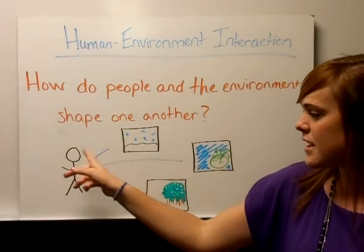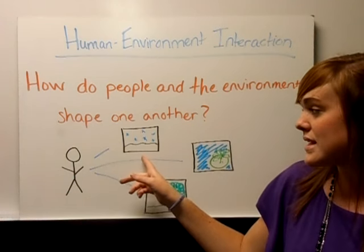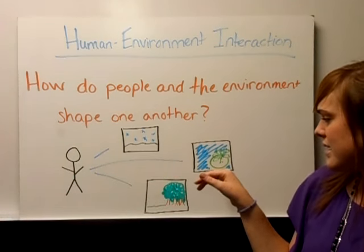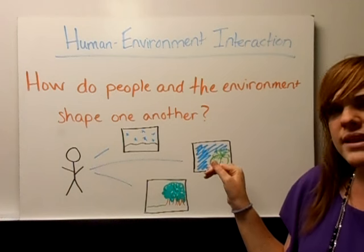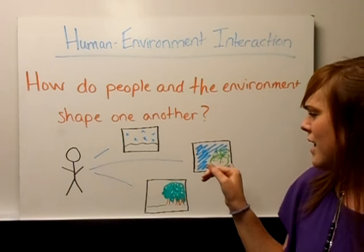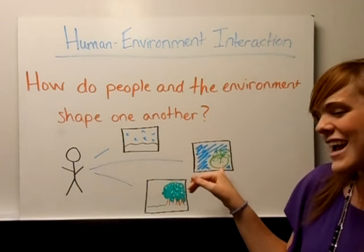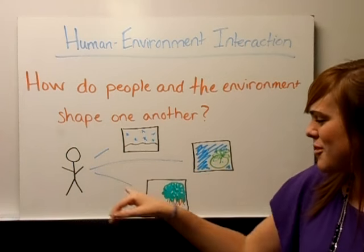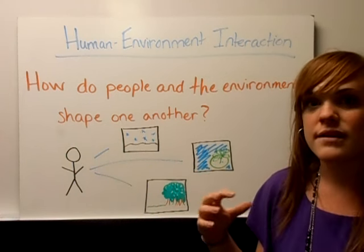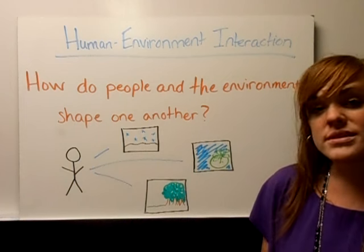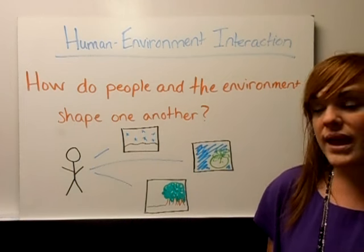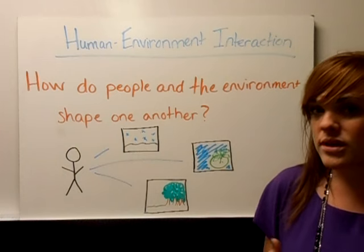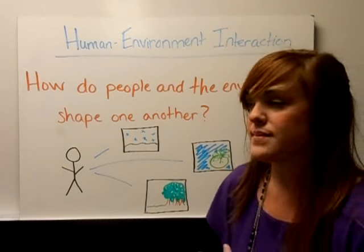Our little stick figure man could live in a place that has a lot of snow, a place that is an island with a palm tree on it, or he could live near a forest with a lot of trees. All those things shape the way that this person will live, and we're going to look at all the different ways that happens.